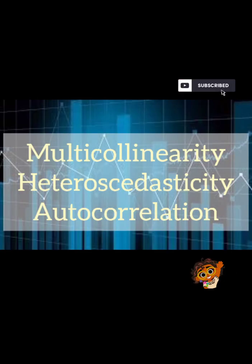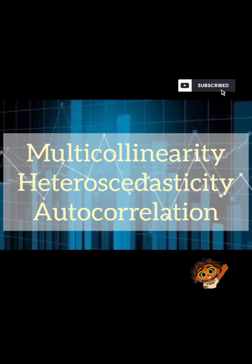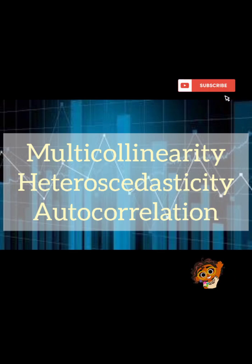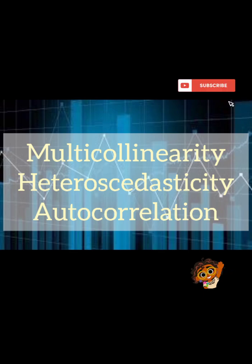In statistics, OLS (Ordinary Least Squares) is a very important topic. We have five assumptions in a linear regression equation and six for multiple linear regression. While using these assumptions in real life, some problems arise. This is called problems in regression analysis. There are three types of problems which arise: the first one is multicollinearity, the second is heteroscedasticity.